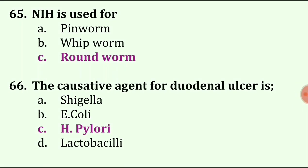The causative agent for duodenal ulcer is — options are Shigella, E. coli, Helicobacter pylori, or Lactobacillus. The answer is Helicobacter pylori.